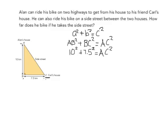Alright. Now we need to multiply. So I know that 10 squared is 100, and if you put in 7.5 squared into your calculator, you will get 56.25 equals AC squared.